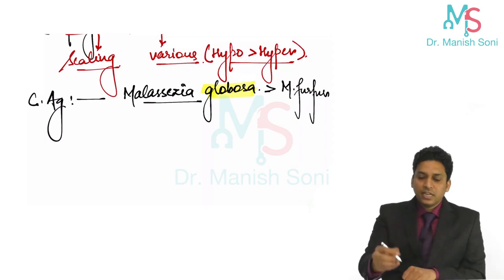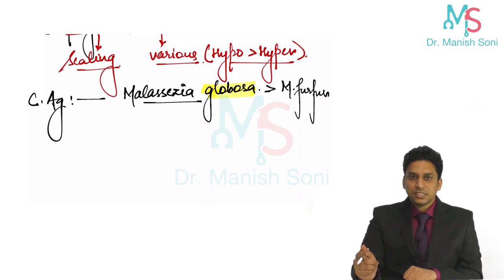Both are common causative organisms, but in most of these cases, the most common isolated species is globosa species of Malassezia. Globosa is more common than furfur.